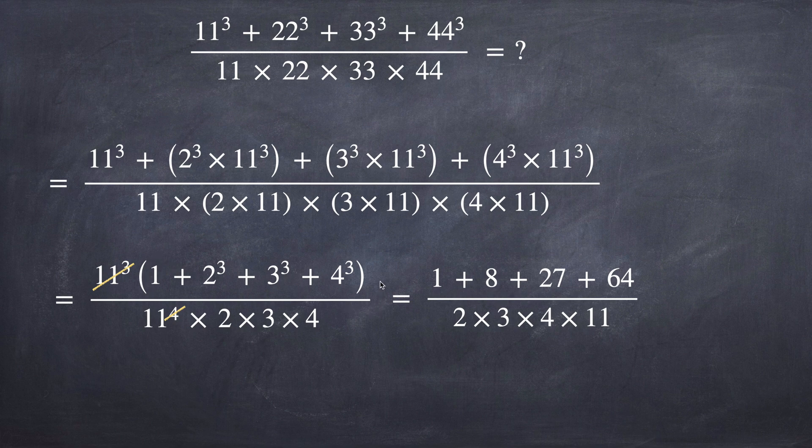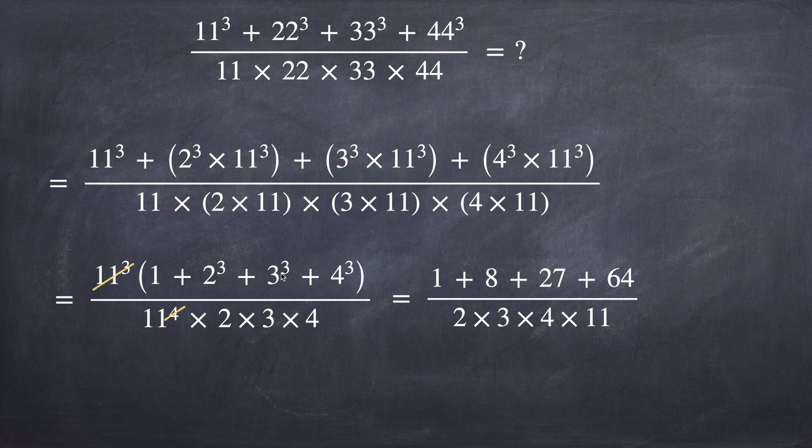So this term in brackets is 1 plus 2 to the power of 3 is 8, 3 squared is 9, 9 times 3 is 27, 4 squared is 16 multiplied by 4 is 64.